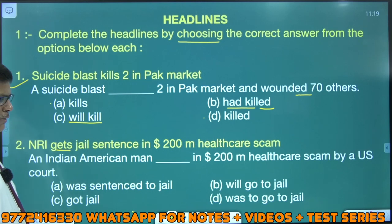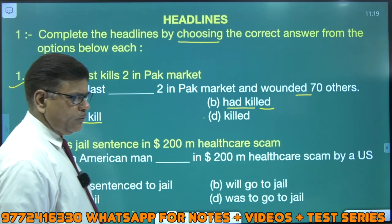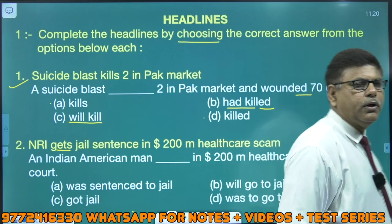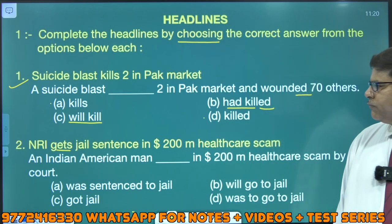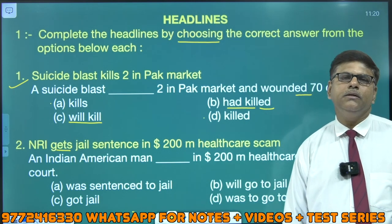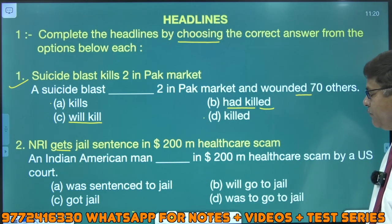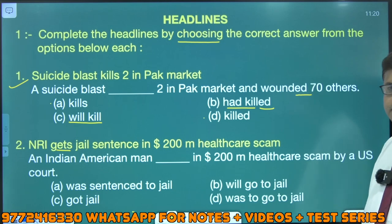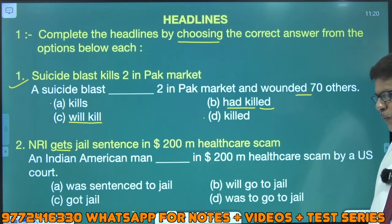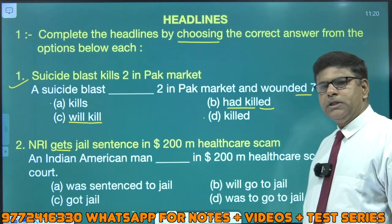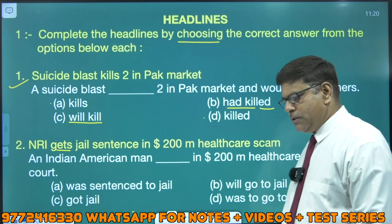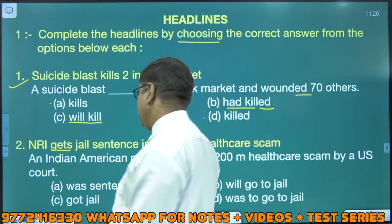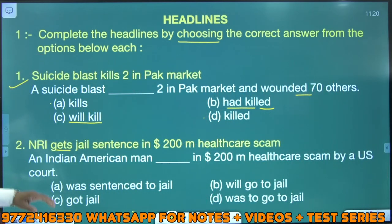Gets — jitne bhi verb hain, unko achhi tarah dekhiye. Kya kami aapko lagti hai, woh try kijiye. Whether it is subject-verb concord, tense, preposition, maybe conjunction — kuch bhi humko gap filling mein mil sakta hai.